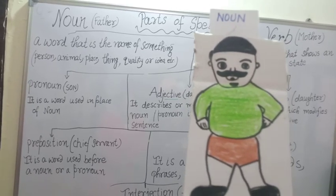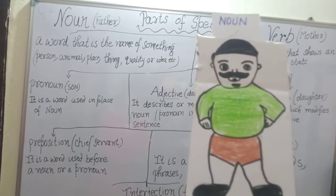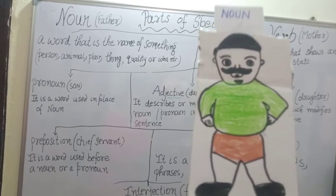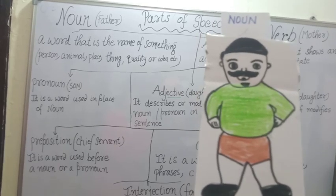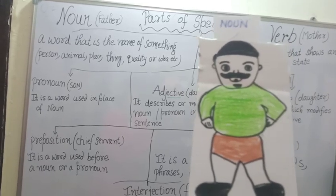So just like Rahul, Raghav, Mumbai, pen — whatever we see around us, that is a noun.